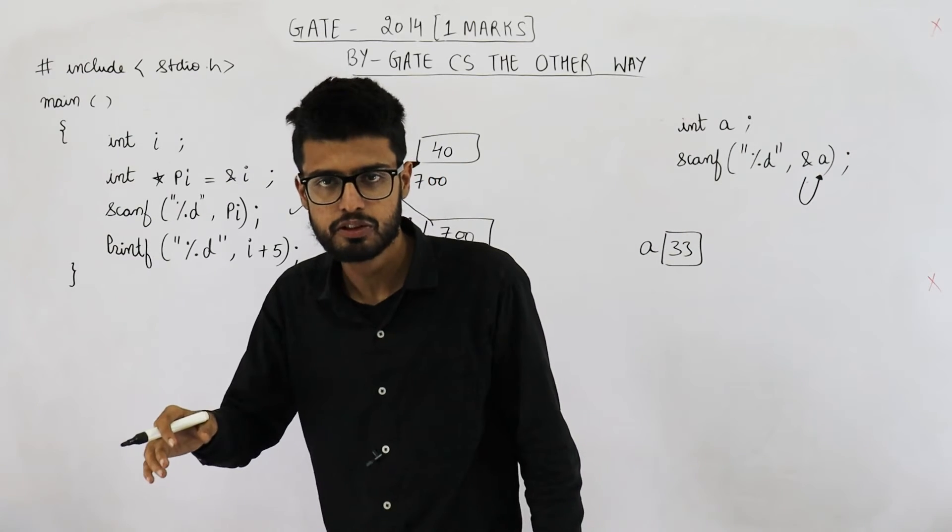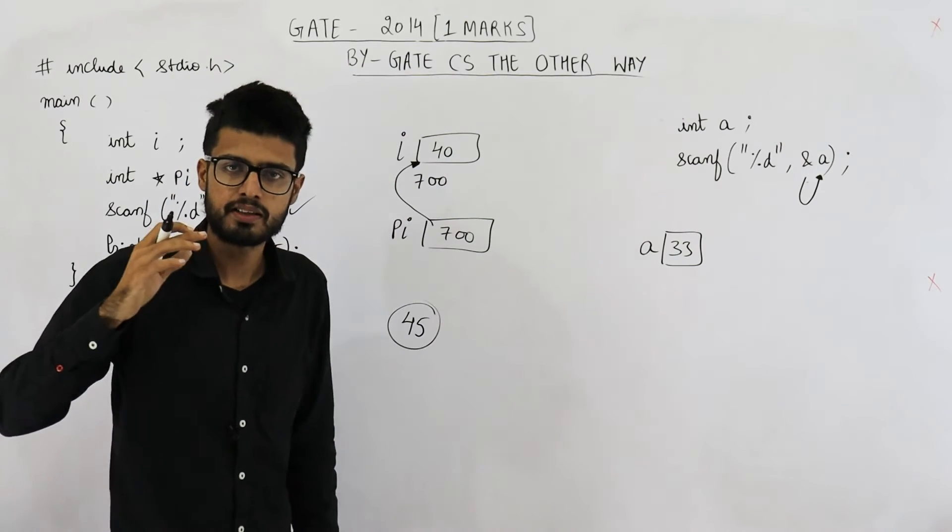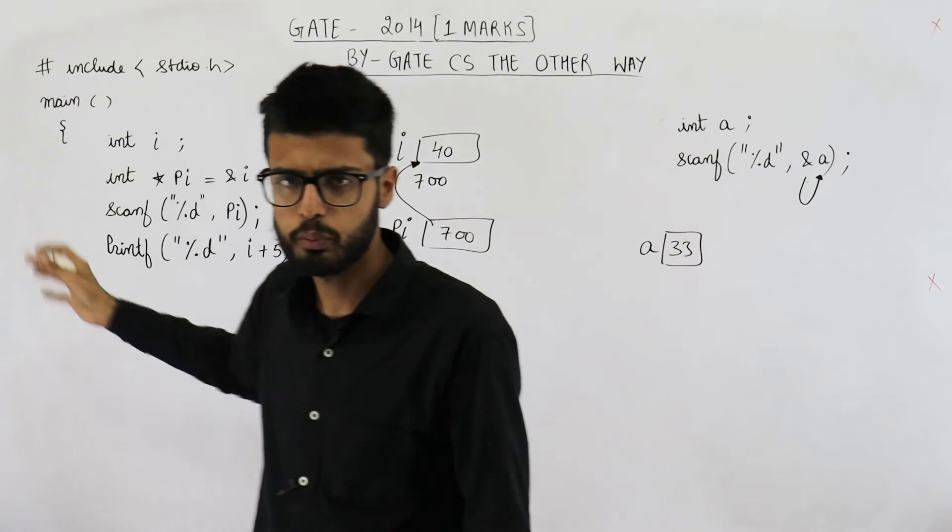So if user enters 30, 35 is printed. If user enters 40, 45 is printed. If user enters 56, then 61 is printed. I hope you are getting.